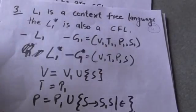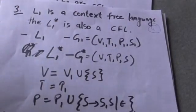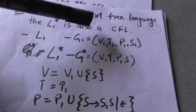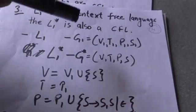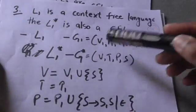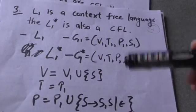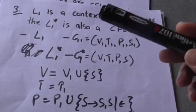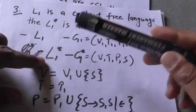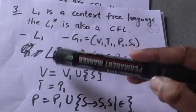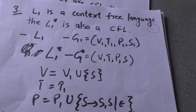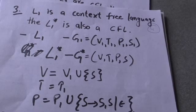The next property is: if L1 is a context-free language, then L1 Kleene star is also a context-free language. Suppose L1 is a context-free language whose grammar is G1 defined by the quadruple (V1, T1, P1, S1). We have to define the grammar of L1 Kleene star. Since L1 is context-free, L1 star will also be context-free. Let its grammar be G*, defined by the quadruple (V, T, P, S).